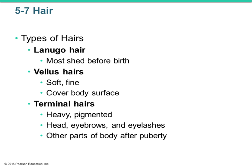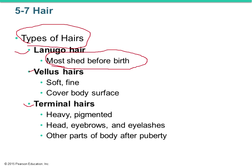Vellus hair is soft, fine, non-pigmented hair covering the body — like peach fuzz. Terminal hairs are much thicker, coarser, and pigmented — your head hair, eyebrows, eyelashes, and pubic hairs are all considered terminal hairs. Hair color, just like skin, is produced by melanocytes — what color is determined by genes. As we age, melanocytes become less active, which is why we get gray hair.